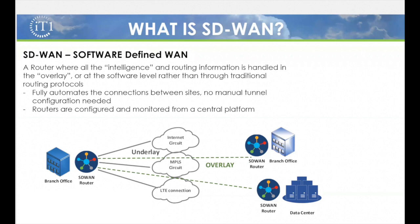An SD-WAN router is really a router where all of the intelligence and the routing information is handled in the overlay, at a software level, versus a traditional router which relies on traditional routing protocols like BGP and OSPF. So the intelligence is really in the software — that's why it's called software-defined WAN.